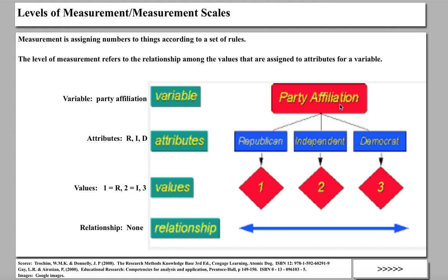Here the variable is political party affiliation, and we've divided it arbitrarily into Republican, Independent, and Democrat. We could have had Libertarian, Green Party, or other attributes, but just for the sake of example. Now values are assigned to the attributes: if the person is a Republican, a one is put by their name; if they're an Independent, a two; if they're Democrat, a three. If we went through 100 people, we'd wind up with some Republicans, some Independents, and some Democrats.